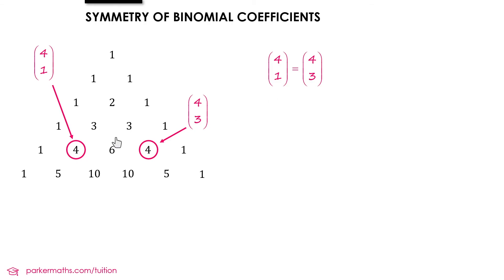Let's pick out another two. We could choose 10 here. This would be row 5, and it's 0, 1, 2, the second entry. So 5 choose 2 is the same value as 5 choose 3. And so we could say 5 choose 2 equals 5 choose 3.